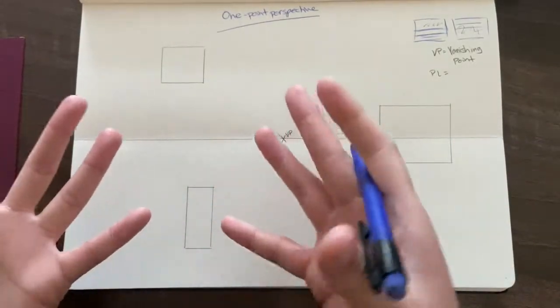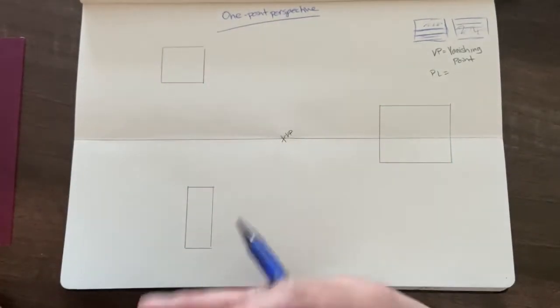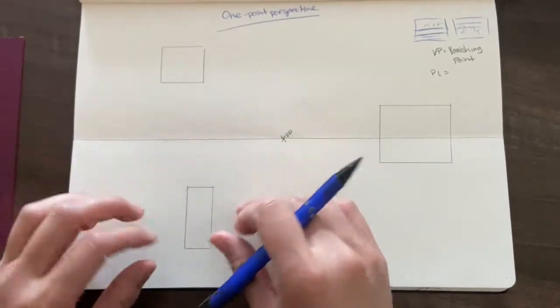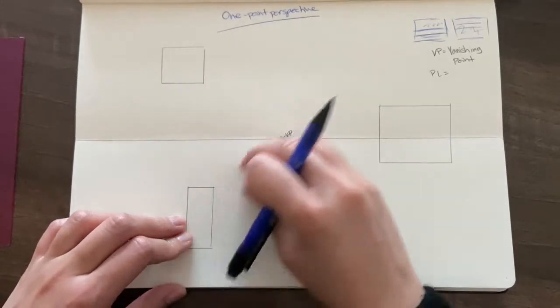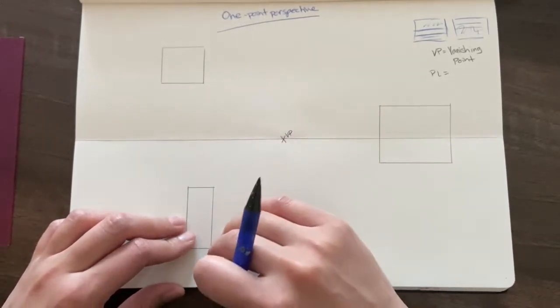So perspective means that shapes that are closer to you, in terms of the viewer, will appear larger. Things that are in the distance, the shapes itself, will appear smaller.